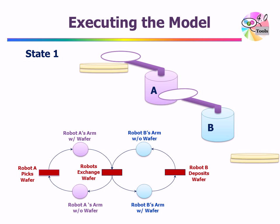Now we look at our animation of the two robots picking and exchanging wafers, and see our Petri Net model mimicking the same states and transitions. Initially, we have robot A and robot B both without wafers. We capture this state by putting tokens in the corresponding places — a token in robot B's arm without wafer, and a token in robot A's arm without wafer. This is the initial state of our system. At this state, the 'robot A picks wafer' transition is enabled, so it fires — our system picks the wafer from stack number one.